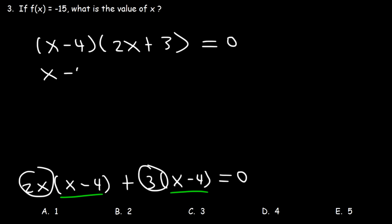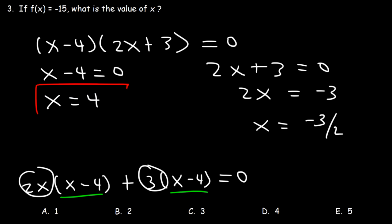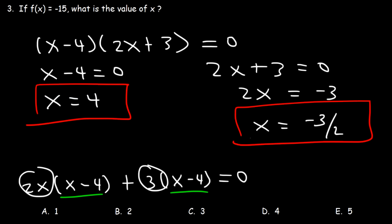Now let's set x minus 4 equal to 0, and 2x plus 3 equal to 0. So x is 4, and 2x is negative 3, meaning x is negative 3 over 2. So we have two answers, but the only one that's listed is answer choice D.